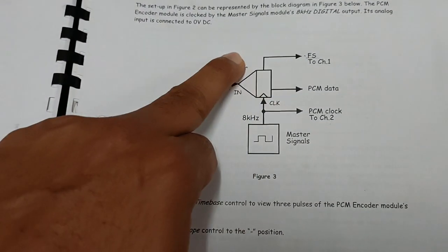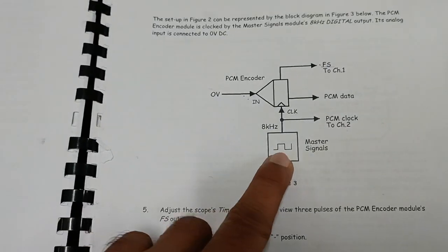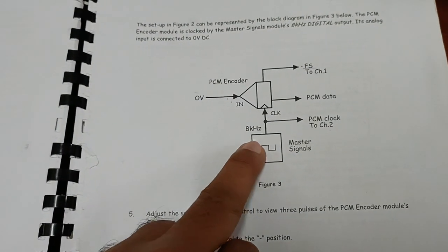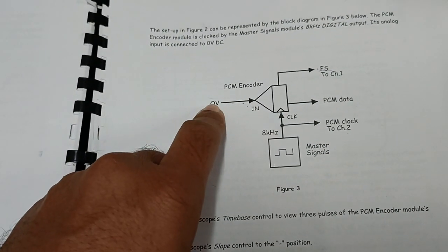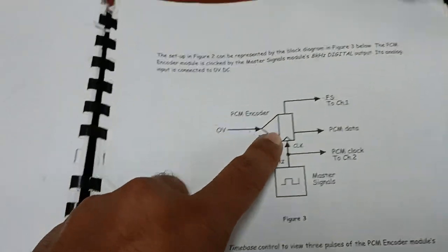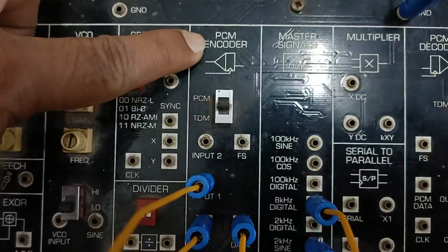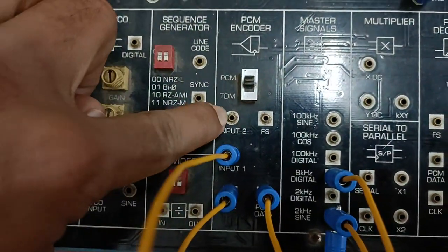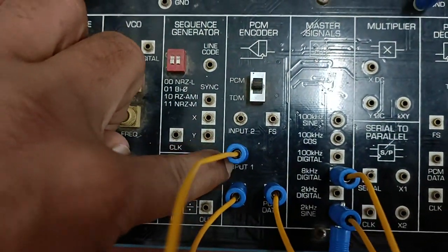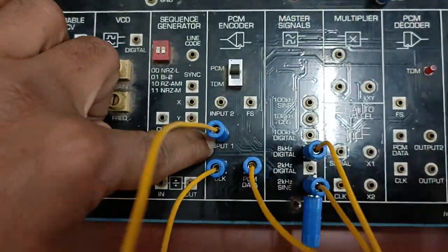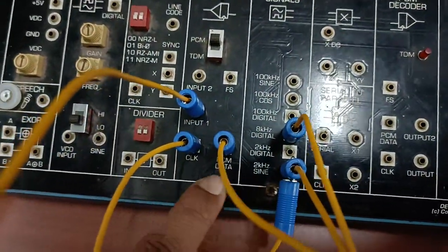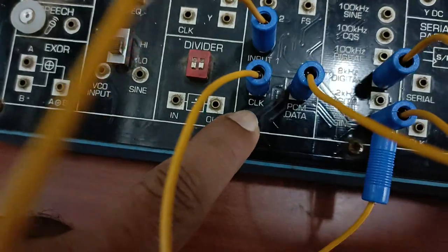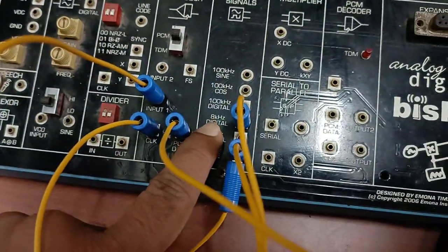This block shows the PCM encoder. It has two inputs: one is the 8 kHz signal given to the clock input, and the second is the analog signal given to the input of the encoder. This PCM encoder has two possible inputs, but we are using only one at this time. The input is a 2 kHz sine wave, and the clock input is the 8 kHz digital signal.